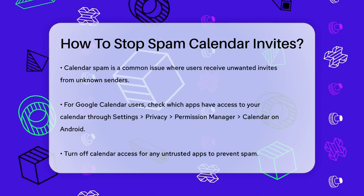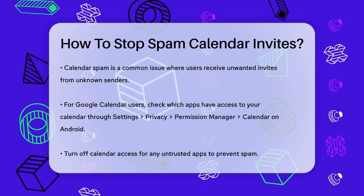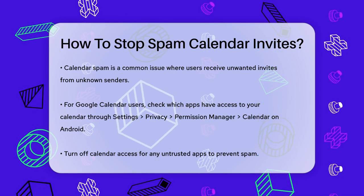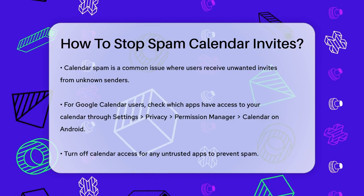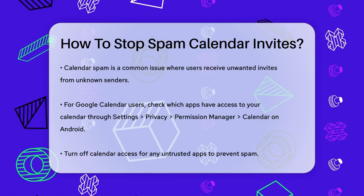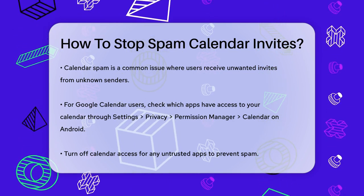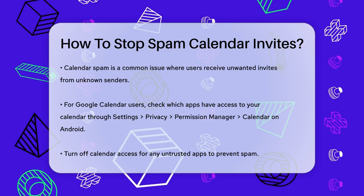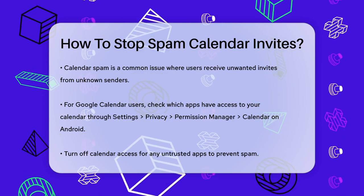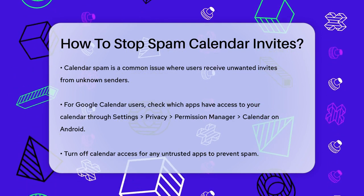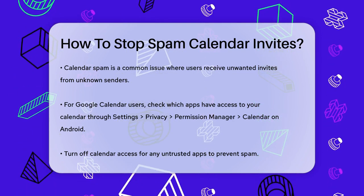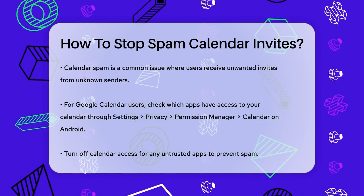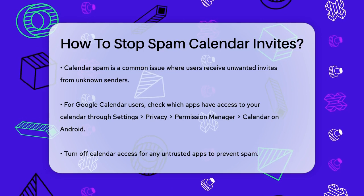First, if you're using Google Calendar, you need to review which apps have access to your calendar. On your Android device, go to Settings, then tap on Privacy, Permission Manager, and finally Calendar. Here, you can turn off calendar access for any app that you don't trust.